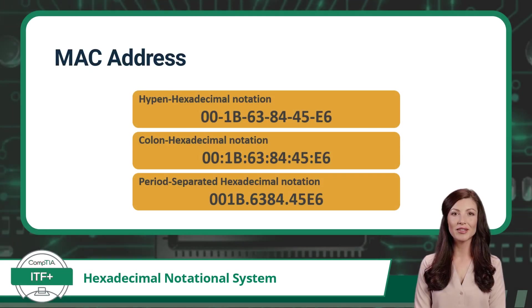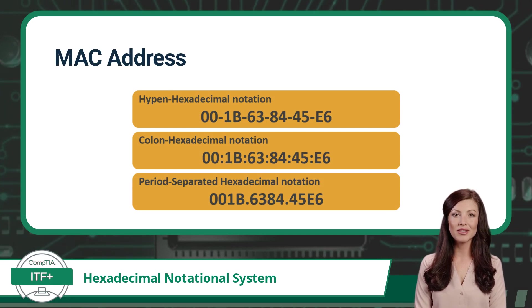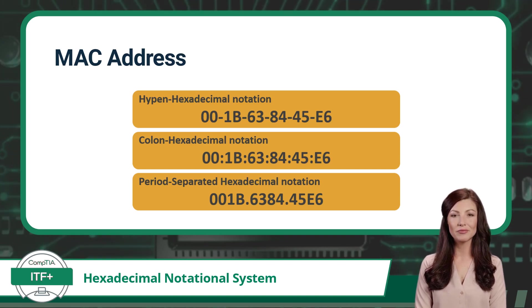Media Access Control, or MAC, addresses are unique IDs assigned to a network interface for use in a localized network. These addresses may be represented in a few different formats, but always contain a total of 12 hexadecimal characters.